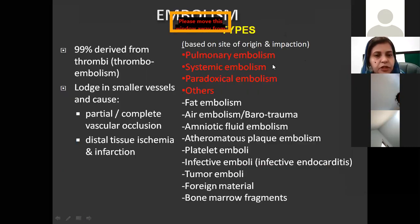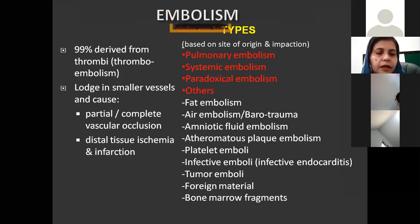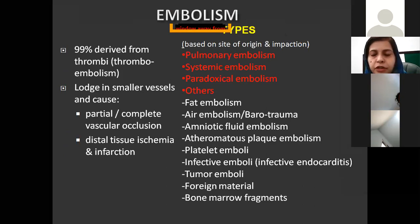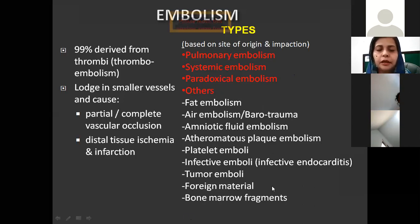Now we come to embolism. An embolus, as mentioned, is a detached part of a thrombus in 99% of cases, and it lodges in the smaller vessel, either completely obliterating it or causing partial occlusion. As a result, there is ischemia and infarction of the distal tissue. The most dangerous type is pulmonary embolism, then we have systemic embolism, paradoxical embolism, and a long list of other causes which can give rise to embolism.